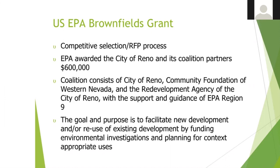The US EPA awarded the city of Reno and its coalition partners $600,000. This $600,000 is used specifically to help revitalize the downtown corridor. The coalition partners consist of the city of Reno, the Community Foundation of Western Nevada, and the Redevelopment Agency of the city of Reno, with support and guidance of EPA Region 9. EPA Region 9 provides a lot of latitude to the city in the manner in which they exercise this grant, truly providing assistance, support, and guidance.